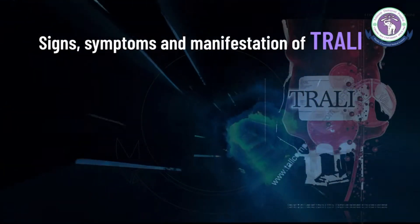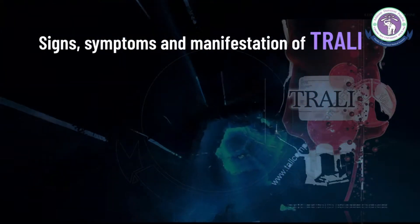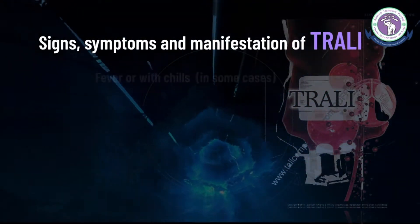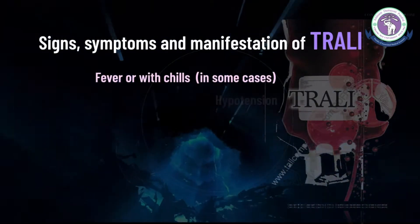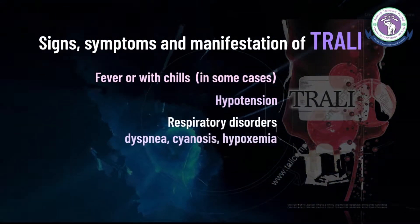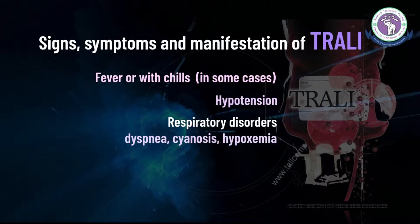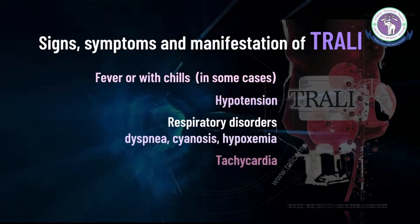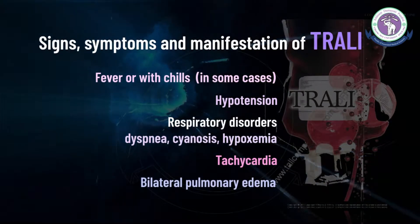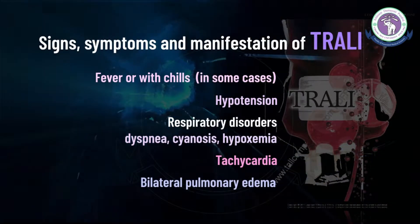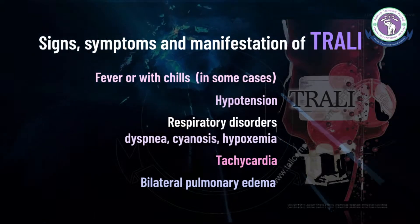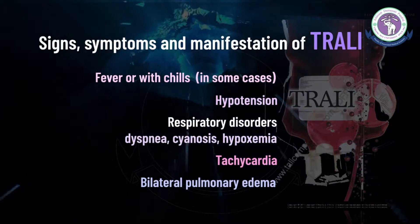TRALI is clinically similar to acute respiratory distress syndrome, including fever, chills, hypotension, dyspnea, cyanosis, hypoxemia, tachycardia, and findings of bilateral pulmonary edema. Transient neutropenia or leukopenia may also be observed.